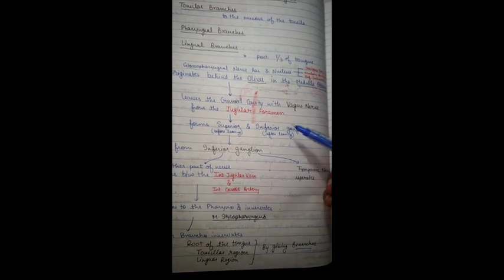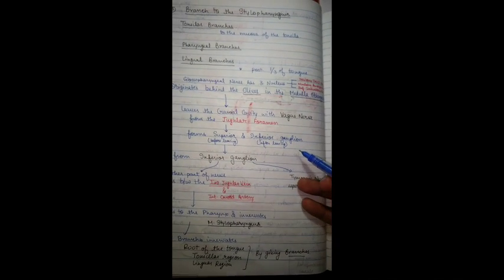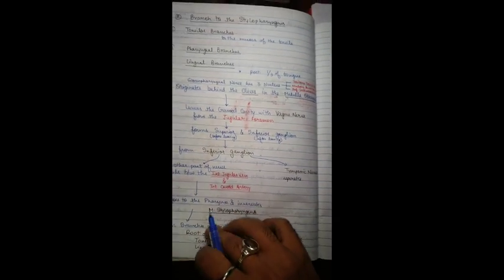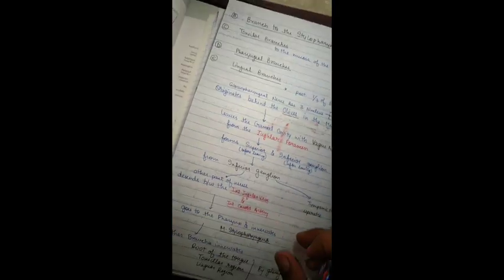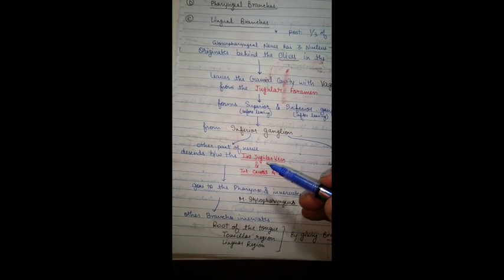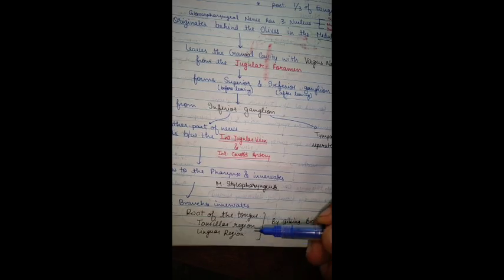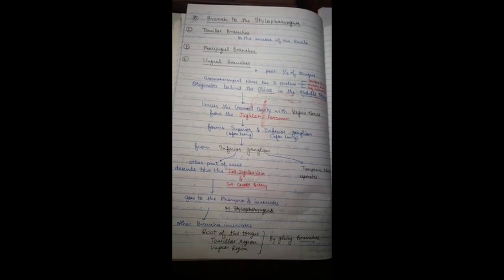Before leaving the jugular foramen it forms a superior ganglion, and after leaving it forms an inferior ganglion. From the inferior ganglion, the tympanic nerve arises, whose detailed anatomy and innervation we have already covered. The other part of the nerve descends between the internal jugular vein and the internal carotid artery, goes to the pharynx, and innervates the stylopharyngeus muscle. Other branches innervate the root of the tongue, tonsillar region, and lingual region, including the posterior one-third of the tongue, palatal tonsil, pharyngeal branches, and lingual branches. That concludes the glossopharyngeal nerve.